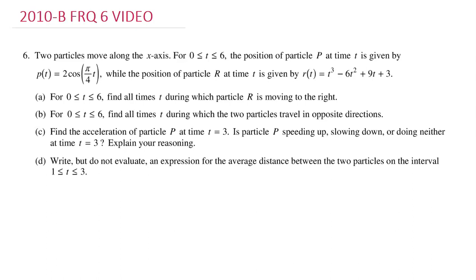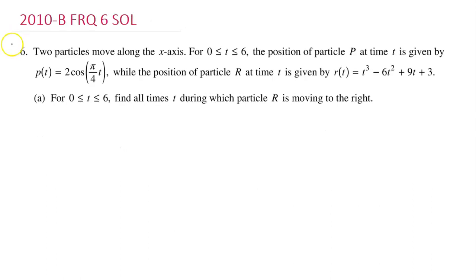In this video, we will go over free response question number 6 from the 2010 AP Calculus Exam Form B. Two particles move along the x-axis. For t between 0 and 6, the position of particle p at time t is given by one formula, while the position of particle r at time t is given by another formula.